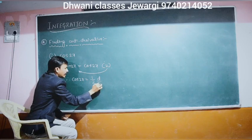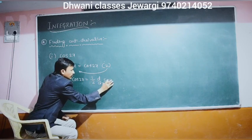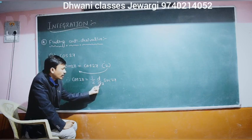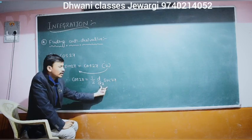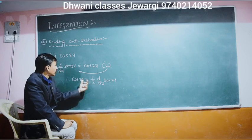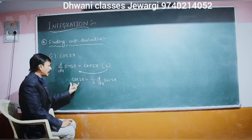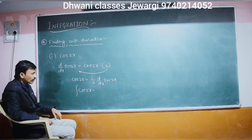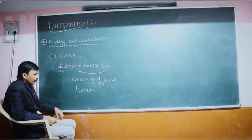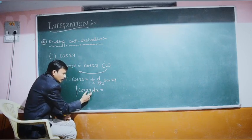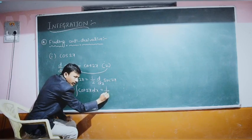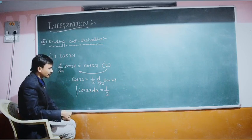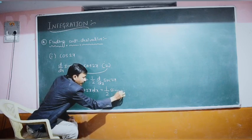We can write: cos(2x) is equal to (1/2) times d/dx of sin(2x). So the integration of cos(2x) equals sin(2x)/2, plus C. That is the anti-derivative.